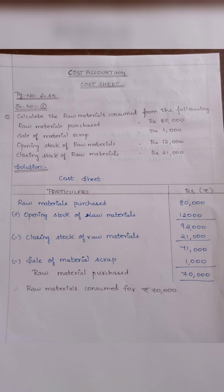Add opening stock of raw materials: 12,000. If you purchase the raw materials, add it — total is 92,000. The answer requires closing stock. We need to minus the closing stock of raw materials. Closing stock of raw materials should be mentioned with a hyphen. So minus 21,000: 92,000 minus 21,000 equals 71,000.